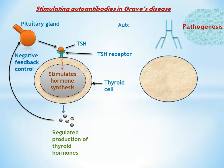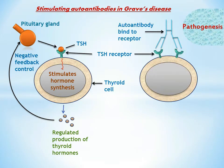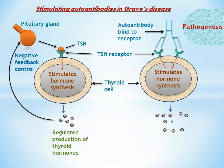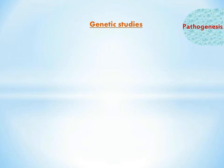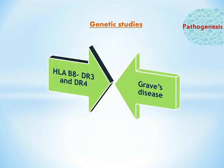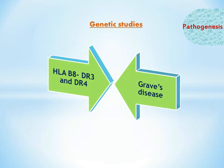In Graves disease, an autoantibody binds to the TSH receptor on the thyroid cell and stimulates it to produce thyroid hormones. Unlike normal conditions, the negative feedback control is absent, leading to unregulated overproduction of thyroid hormones. This unique mechanism causes diffuse enlargement and hyperfunction of the thyroid. Genetic studies have shown association of HLA, BADR3, and DR4 with Graves disease, indicating genetic susceptibility to environmental factors.